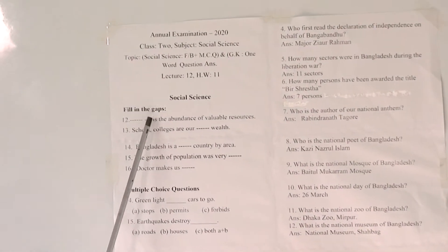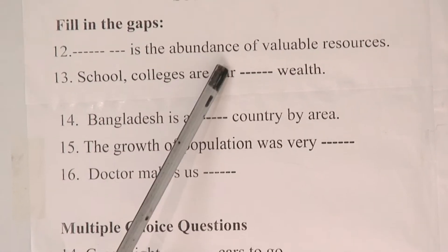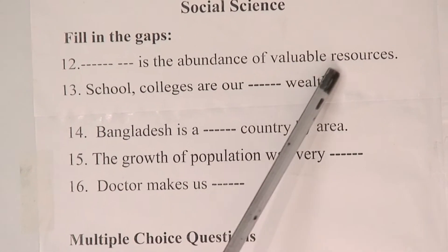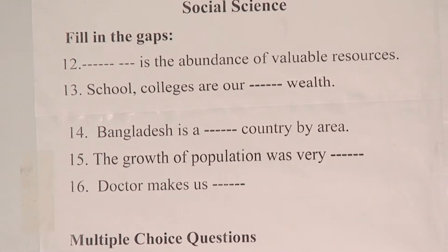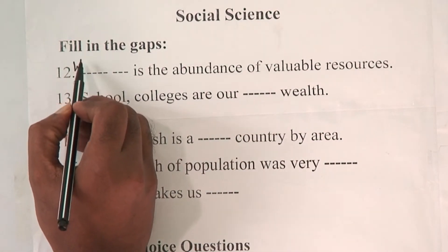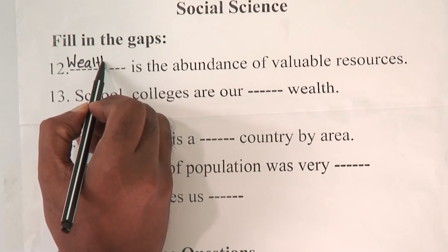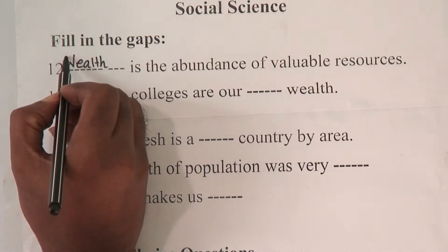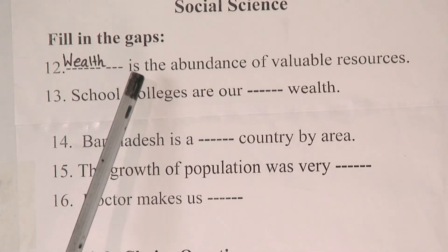Look at fill in the blanks number 12: 'Dash is the abundance of valuable resources.' The correct answer is wealth. Wealth is the abundance of valuable resources. I am writing W-E-A-L-T-H. Wealth.